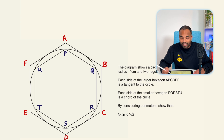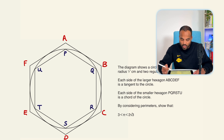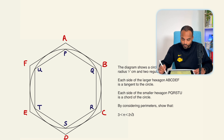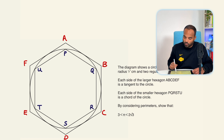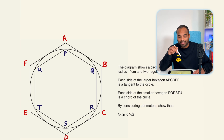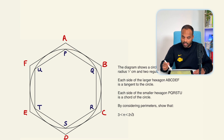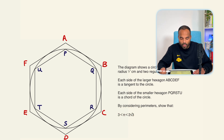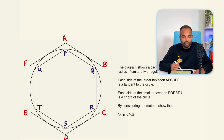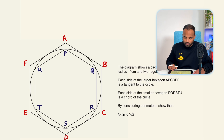We're told: by considering perimeters, show that 3 is less than π, which is less than 2√3. I know what you're thinking — where on earth do we start? With things like this, go with what you know. I look for keywords: we're dealing with perimeters. We have three shapes and three quantities in the inequality, so I want to work out the perimeters of all three shapes.